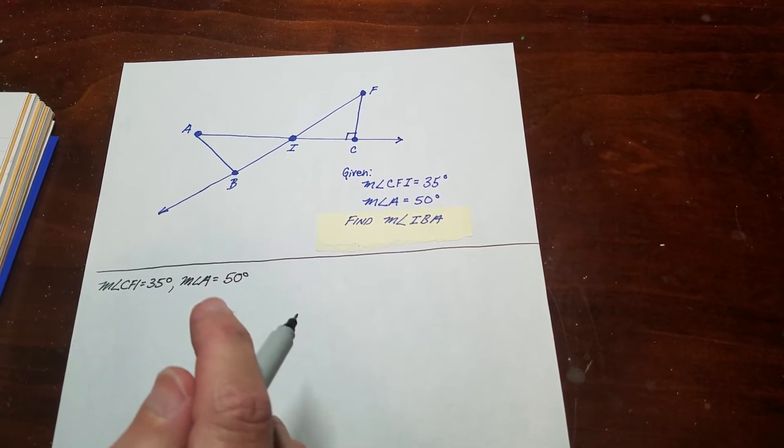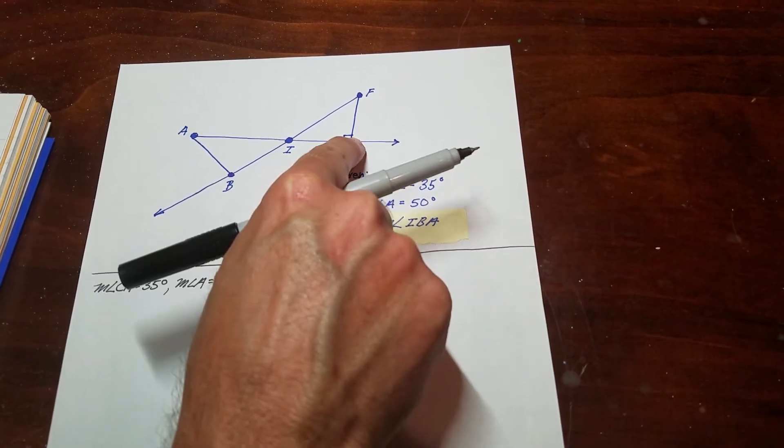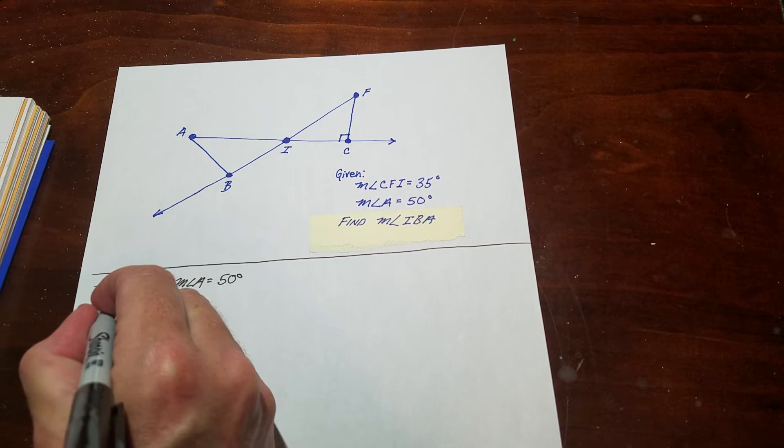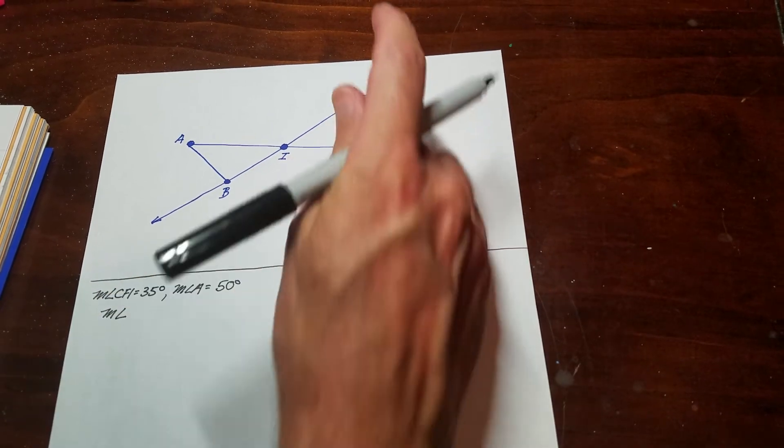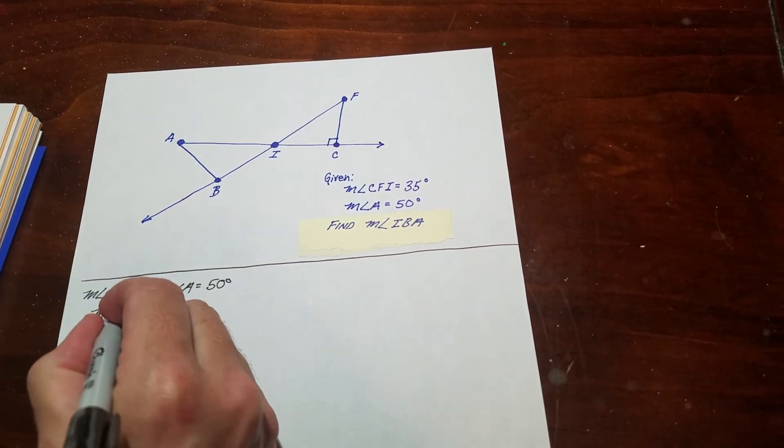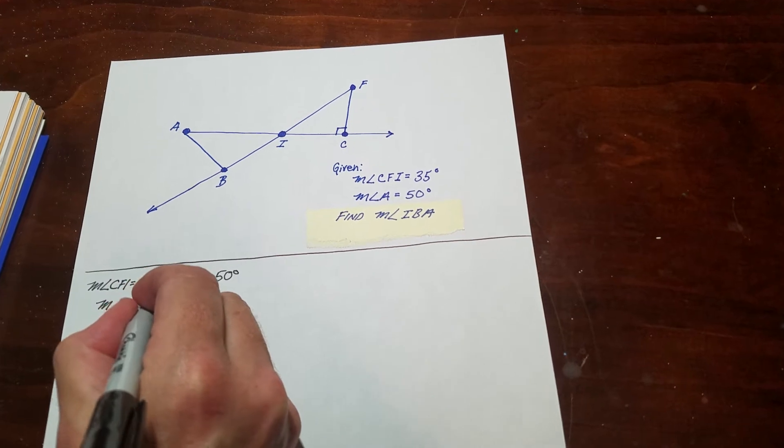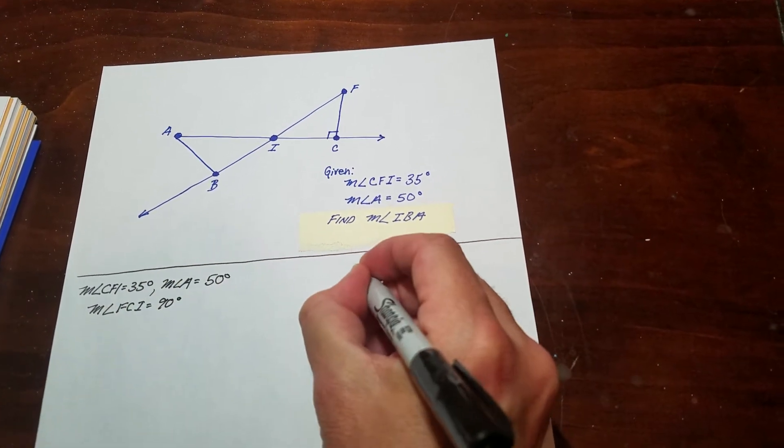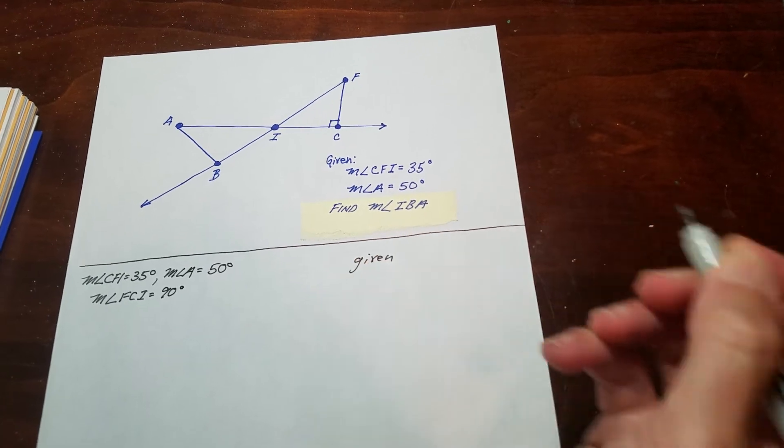What we're looking for is angle IBA, this angle right here. That's our mission. The diagram also shows this is 90 degrees, so the measure of angle FCI equals 90 degrees. All that was given, and now I'm ready to go.